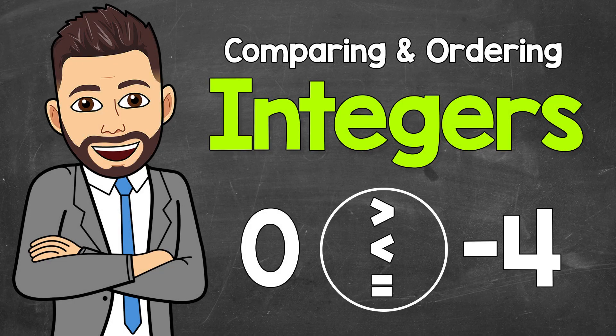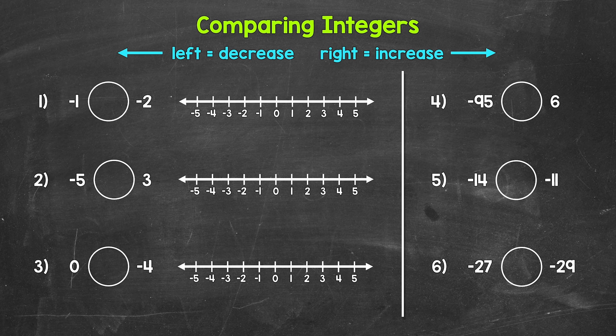Welcome to Math with Mr. J. In this video, I'm going to cover how to compare and order integers. We will be working with positives and negatives here. We will start with comparing and then move on to ordering. For comparing, we will go through three examples where we will use a number line to help us compare, and then we will move on to three more examples where we will not use a number line.